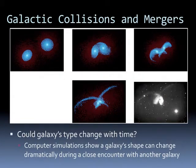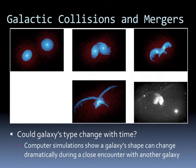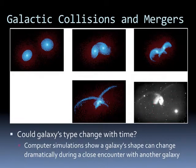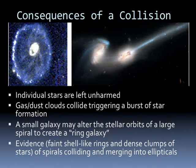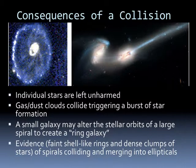Could galaxy type change over time? Computer simulations show a galaxy's shape can change dramatically during a close encounter or collision with another galaxy. This computer simulation shows two spiral galaxies that collide; as they go through each other, the galaxies throw off arms and eventually become an elliptical. We actually see in space something that looks exactly like what we see in the simulation — two galaxies in the act of colliding. In a collision between galaxies, individual stars are fairly much left unharmed since most space is empty and they move right through each other. However, gas or dust clouds suddenly reach enough density to collapse, producing a burst of star formation. Faint shell-like rings and dense clumps of stars are evidence of spirals colliding and merging to form ellipticals.